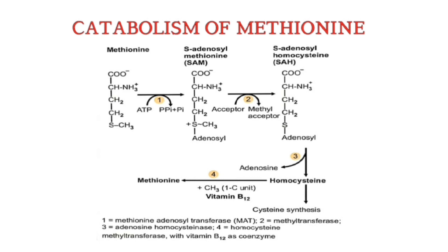Therefore, methionine must be activated to S-adenosylmethionine, in which the adenosyl group is transferred to the sulfur atom, causing the methyl group to become more labile. This allows it to be easily transferred to acceptors for various metabolic processes.